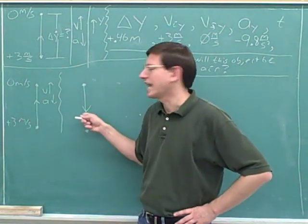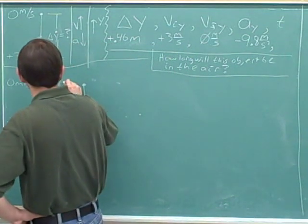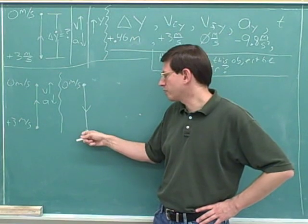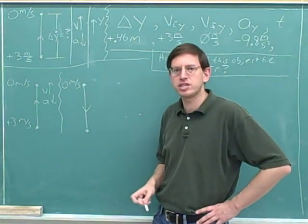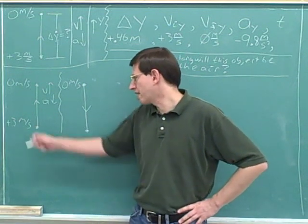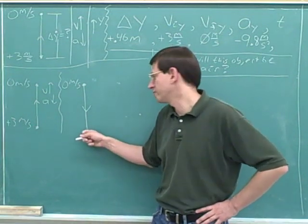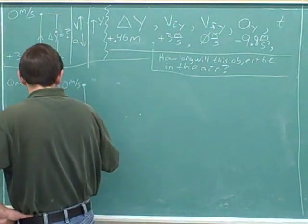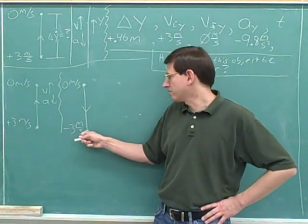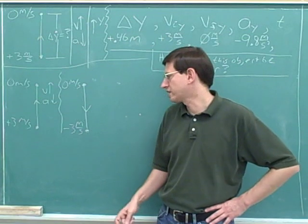Now we have an upward path and a downward path. What's the downward path going to look like? We know that at the peak we're starting with a velocity of 0 meters per second. How fast are we going to be going by the time we hit the ground? We can use symmetry — since when we originally left the ground we were going 3 meters per second, when we hit the ground again we should also be going 3 meters per second, but now we're moving downwards. So this velocity when we hit the ground is going to be negative 3 meters per second. That's the symmetry of projectile motion.